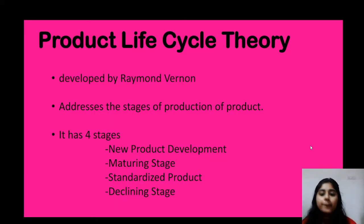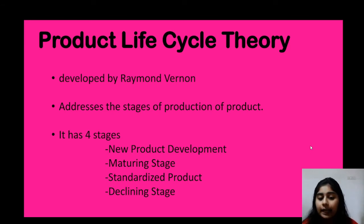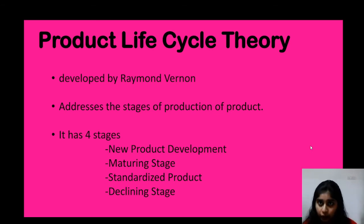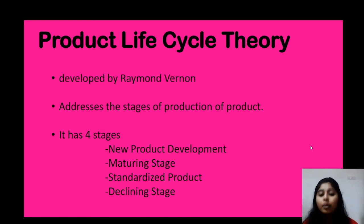The next theory is product life cycle theory, developed by Raymond Vernon. It addresses the stages of production of a product: how a product is introduced, then grows to maturity, then reaches a saturation point, and finally enters a declining phase.